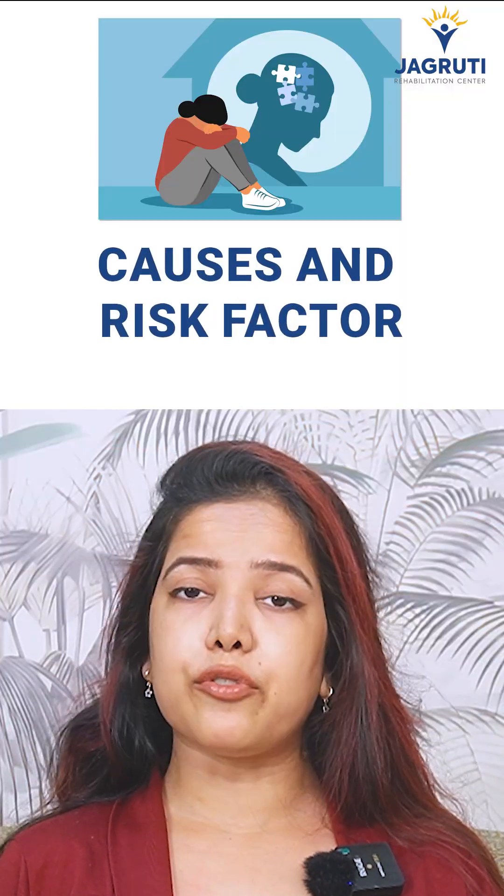Let's understand causes and risk factors. Biophysical addiction develops due to long-term substance use that changes the brain's chemistry. Key risk factors include genetic predisposition, early exposure to addictive substances, chronic stress or trauma, co-occurring mental health disorders, and repeated use of substances that hijack the brain's reward system. Over time, the body adapts and demands the substance just to maintain balance. This is no longer about choice — it's about survival.